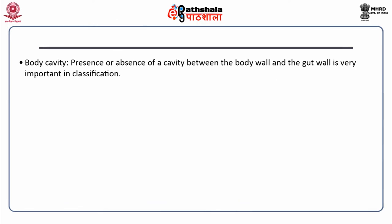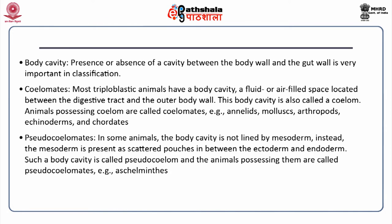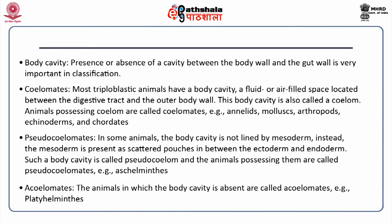Based on the presence or absence of a cavity between the body wall and gut wall, animals are classified into coelomates, pseudocoelomates and acoelomates. Coelomates possess a fluid or air-filled coelom; examples include phyla annelida, mollusca, arthropoda, echinodermata and chordata. In pseudocoelomates, the body cavity is not lined by mesoderm; instead mesoderm is present as scattered pouches between ectoderm and endoderm — example phylum aschelminthes. Animals in which the body cavity is absent are called acoelomates; the example is phylum platyhelminthes.